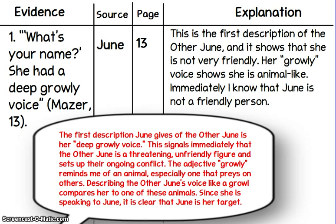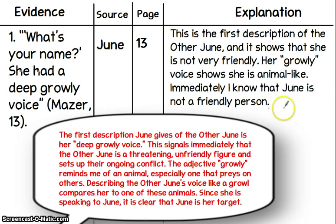The adjective 'growly' reminds me of an animal, especially one that preys on others. So describing the other June's voice like a growl is basically a way of comparing her to one of these animals. And since she's speaking to June, it's clear that June is her target. In the explanation column, I wrote that this is the first description of the other June and it shows that she's not very friendly. Her growly voice shows she's animal-like, and immediately I know that the other June is not a friendly person.